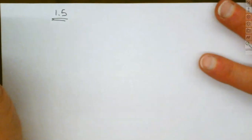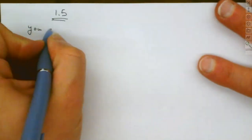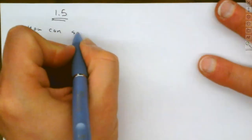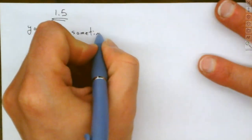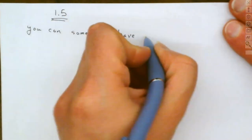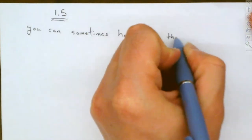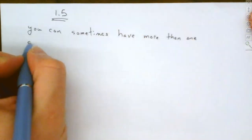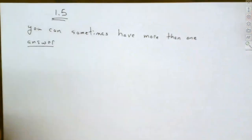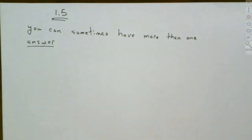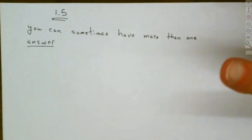We're going to be talking about applications. When we solve these, you might get more than one answer. So sometimes on these, you might have a question where you can have more than one answer. In many cases, you can't. Now there are certain things that we have to remember — these are applications.